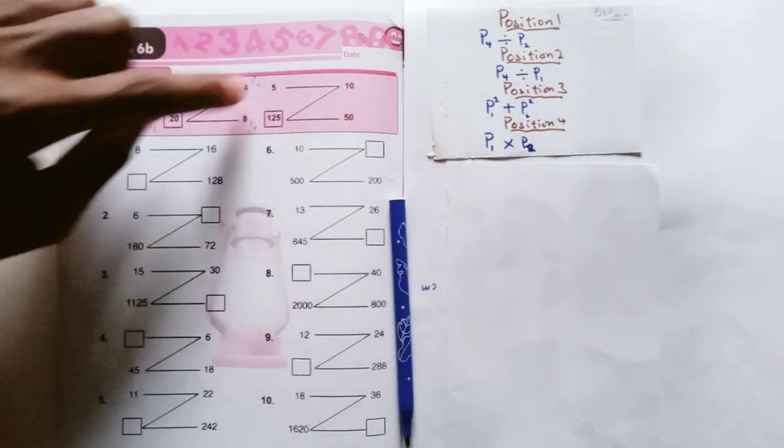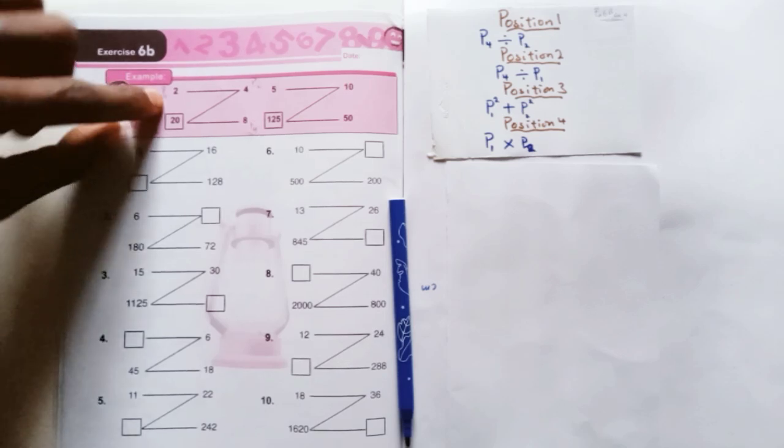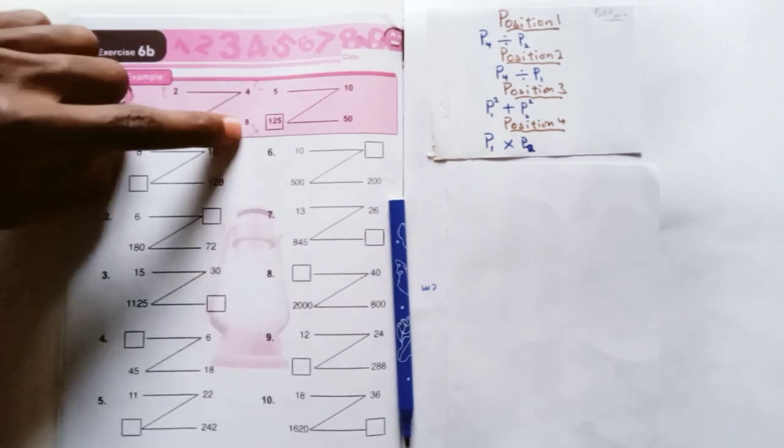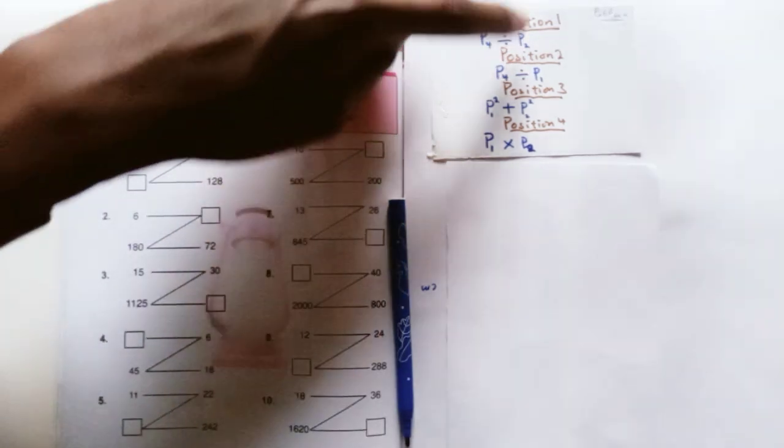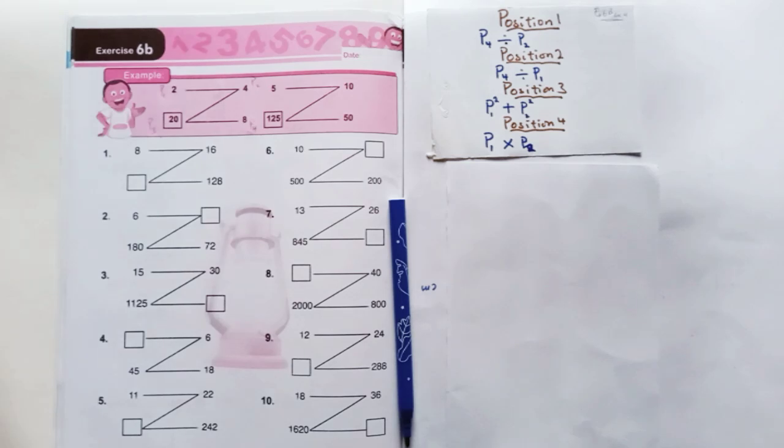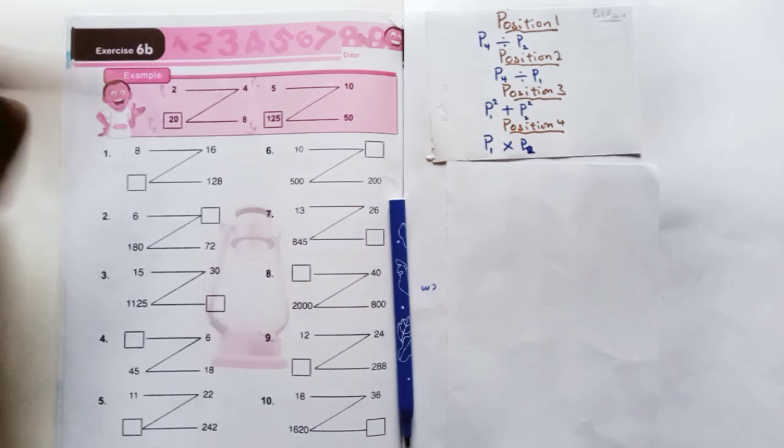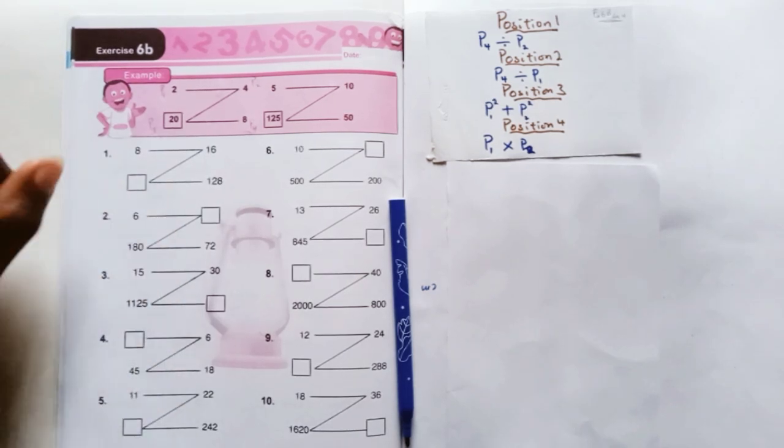We've got four fields here we need to fill, four positions. I label this P1, P2, P3, P4. These are the formulas you should use. Just use this formula or this pattern and you'll be able to answer this.